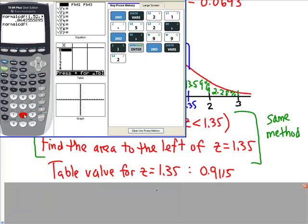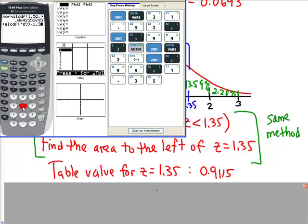And what we're going to put in here is we're going to push the negative, which is right below the number three, and then we're going to put second and get that E99. The calculator says that that's negative infinity. Use your comma, and on the right side was 1.35. Close that, push enter, and we get a value of 0.91149, which very easily rounds up to 0.9115.